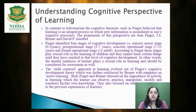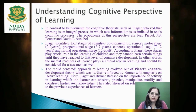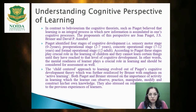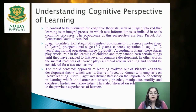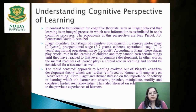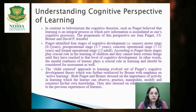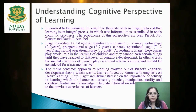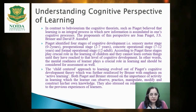Now let us move towards the cognitive perspective of learning. In contrast to behaviorism, cognitivist theories — given by Piaget — hold that learning is an integral process in which new information is assimilated into one's cognitive processes. New information is being assimilated. The proponents of this cognitive perspective of learning are Piaget, Bruner, and David P. Ausubel. Piaget identified four stages of cognitive development, and it is mandatory to mention his theory here.